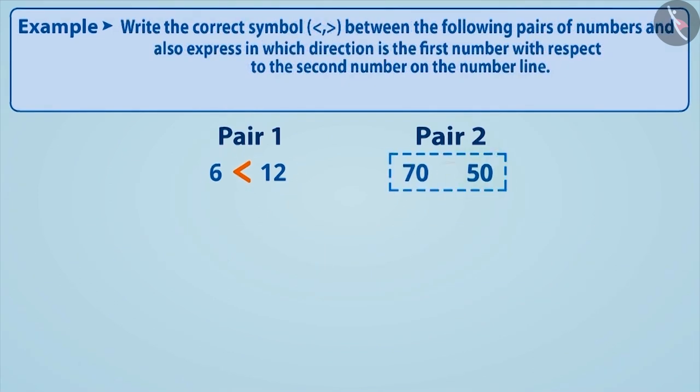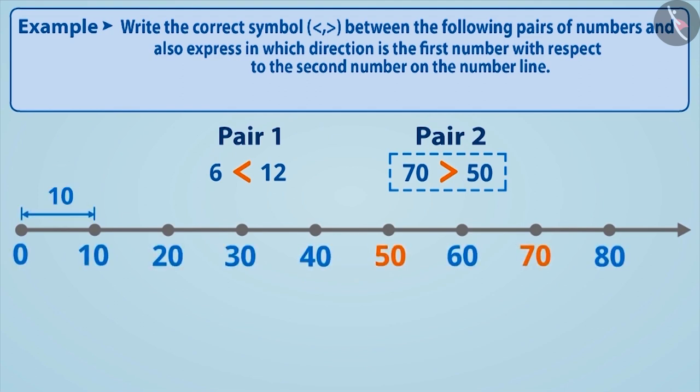Number 70 is larger than 50. To express these on the number line, we have to keep a reasonable distance between points. Here, we will keep distance of 10 units between the digits.